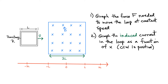We're going to start with two problems here. Number one is we want to graph the force that's needed in order to move this loop at constant speed from the left hand side all the way to the right hand side. So let's graph the force as a function of position — I'm going to call that position x down here at the bottom. And number two, we're going to see what is the induced current in the loop as a function of x.